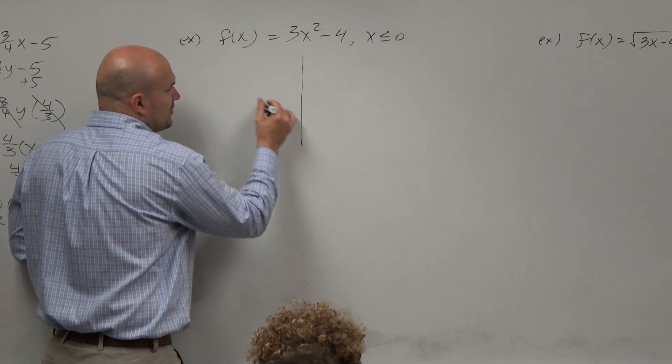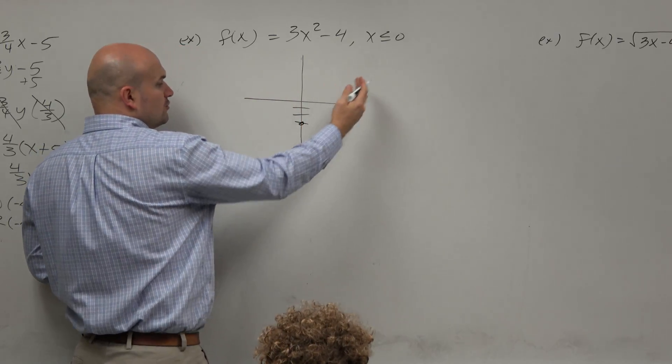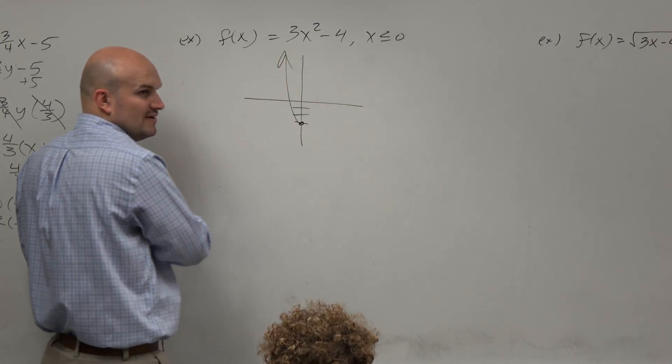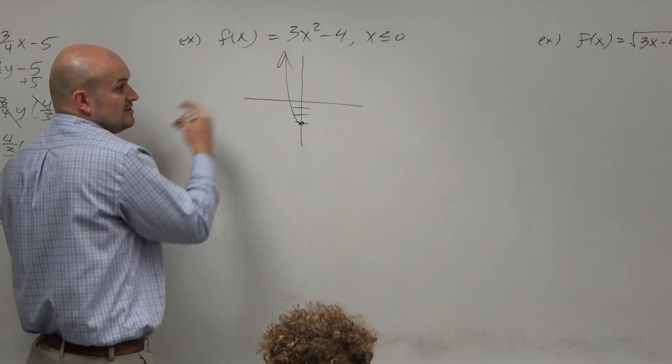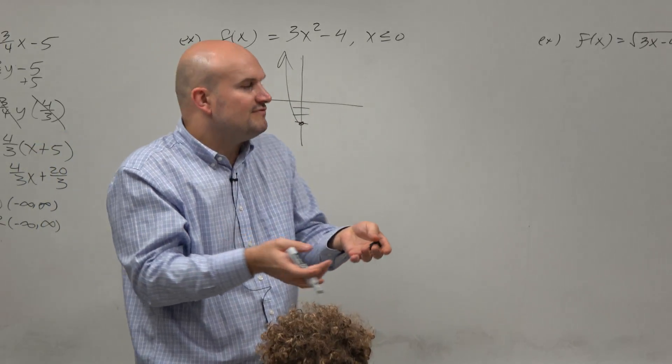And I say, oh, well, thankfully I practiced that in the piecewise functions lesson. So graphing values that are less than 0 is going to look something like that. I don't need to worry about the positive values. So now I at least know what the graph is going to look like.